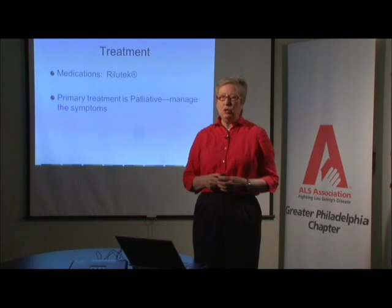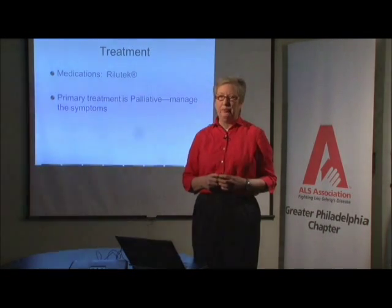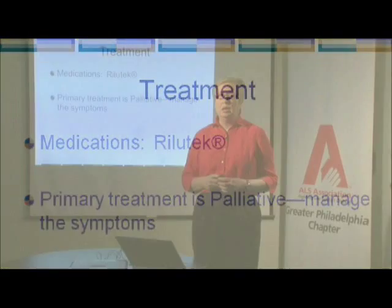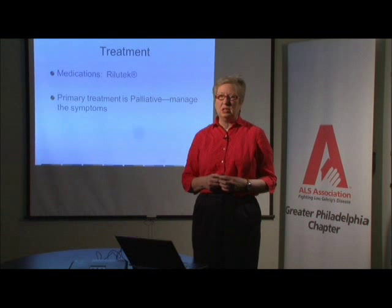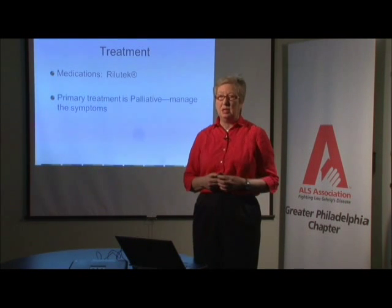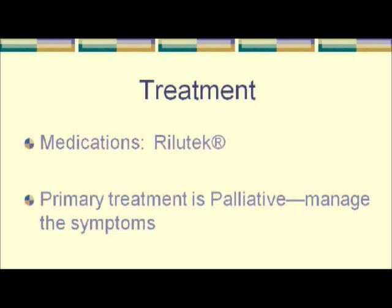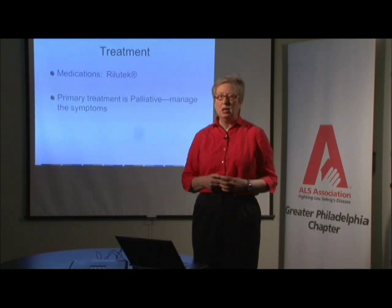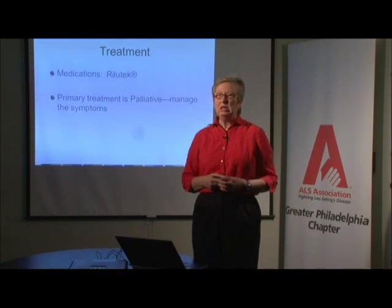There's really only one FDA-approved drug that's been shown to slow the progression, and that's called Riluzole. The studies vary, but several big studies show it decreases progression by anywhere from three months to a year of living longer, or avoiding the need for a tracheostomy. The primary treatment is palliative — symptom management — and that's what a lot of folks do in nursing homes and in the home. At some point, eventually the breathing muscles and the chewing and swallowing muscles are going to become involved.